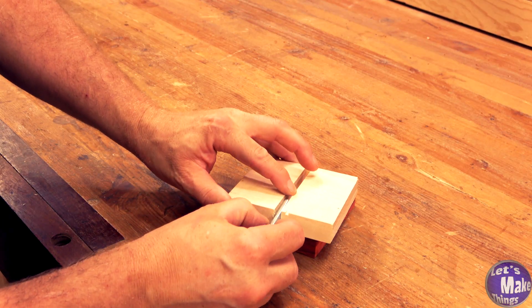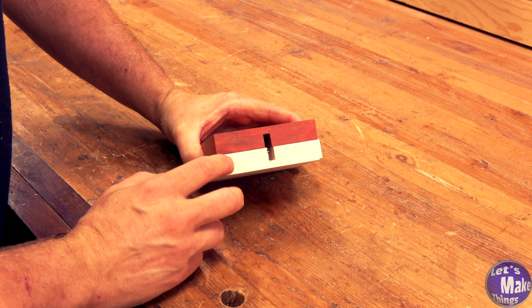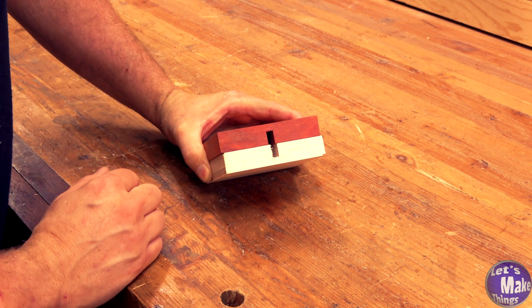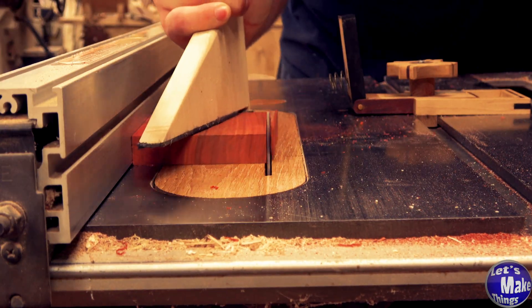When you're done, a quarter inch bolt should be able to fit inside the slot. Now we'll slice these into 16th inch slices and it has to be right on the money 16th of an inch. I'm going to use my thin strip jig to slice six slices off of each one of these blocks.